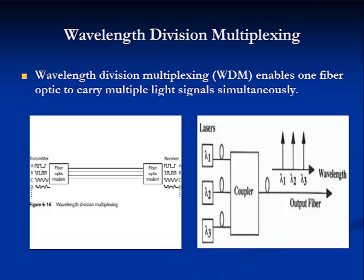Wavelength division multiplexing, or WDM, enables one fiber optic strand to carry multiple light signals simultaneously. This is accomplished by dividing the channel, or glass fiber strand, into subchannels according to different wavelengths. WDM usually requires multiple lasers or tunable lasers to generate optical pulses at different wavelengths. Today, dense wave division multiplexing — a version of WDM — uses up to 40 wavelengths, and in the future it will no doubt be many more. Dense wave division multiplexing is one reason why we have tremendous capability in extending bandwidths and data carrying capacities in long-haul networks, along with the unlimited bandwidth of single-mode fiber.